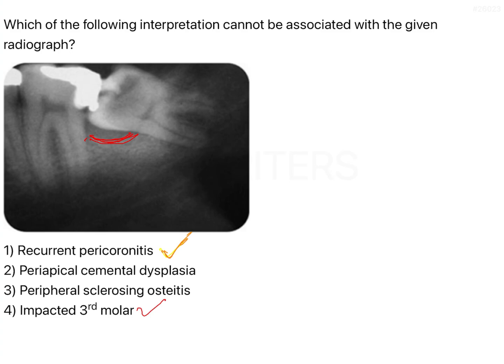Now for the next two options — periapical cemental dysplasia and peripheral sclerosing osteitis (condensing osteitis). There is one easy way to remember: periapical cemental dysplasia most frequently occurs in the mandibular anterior teeth, whereas condensing osteitis occurs in the posterior mandibular teeth as a sequela to caries.